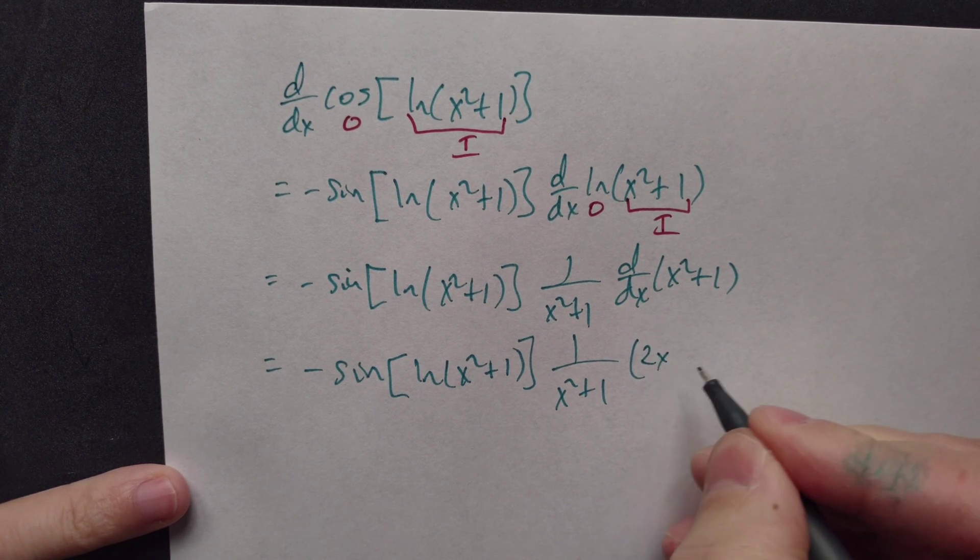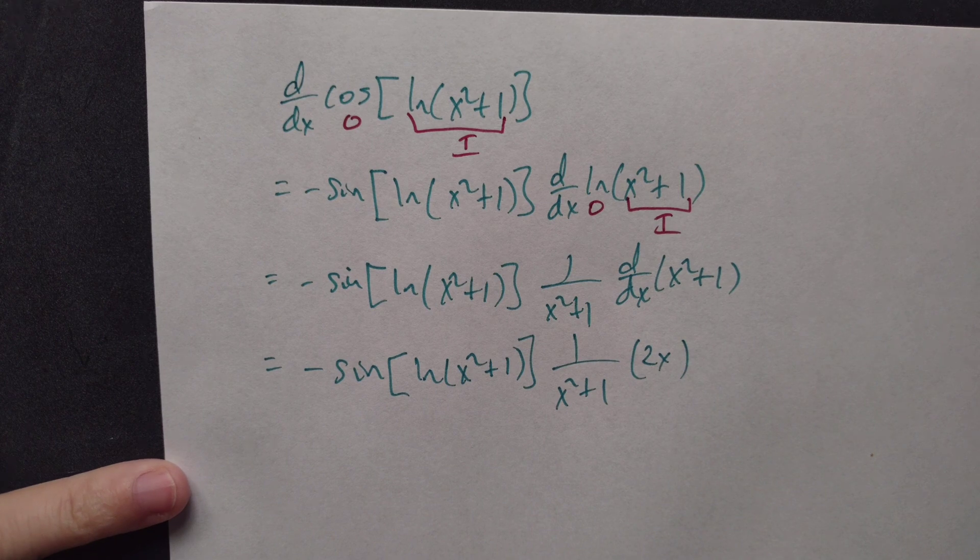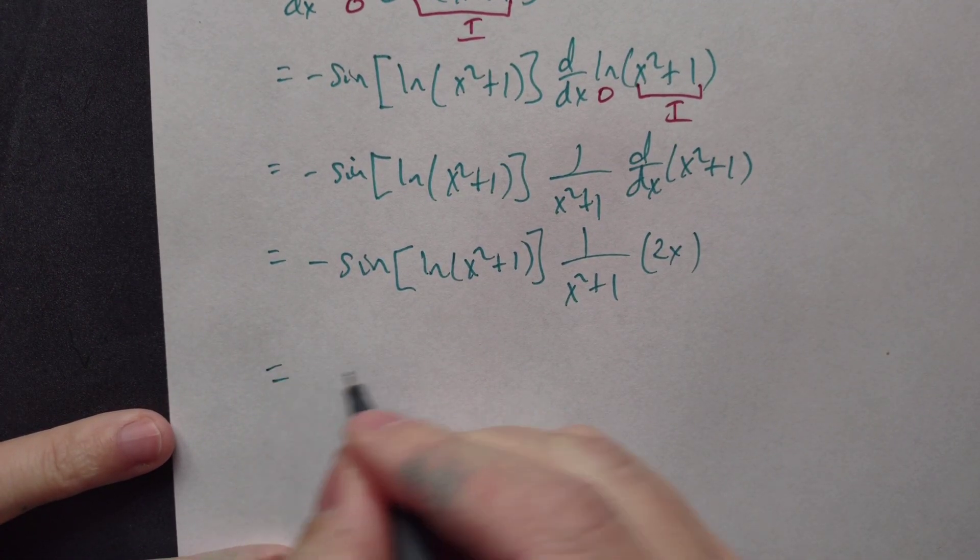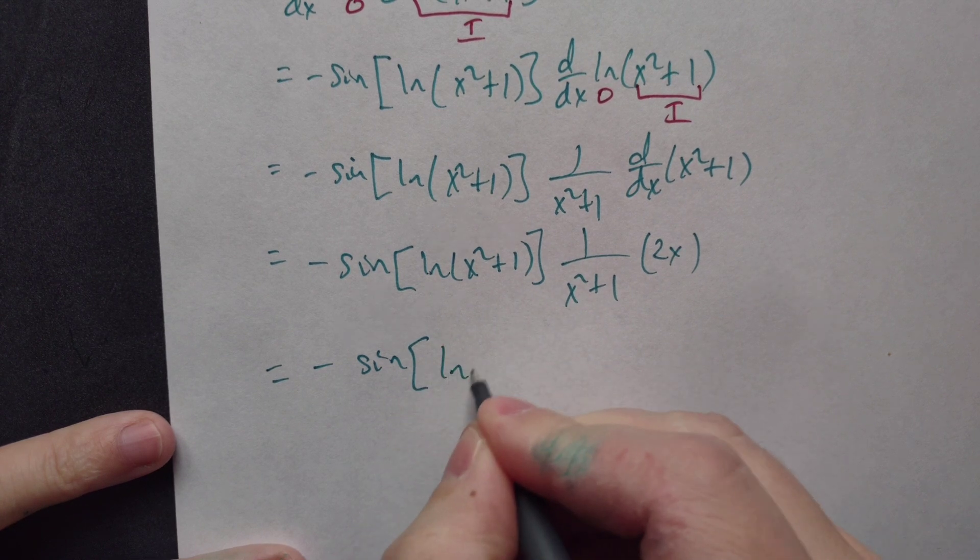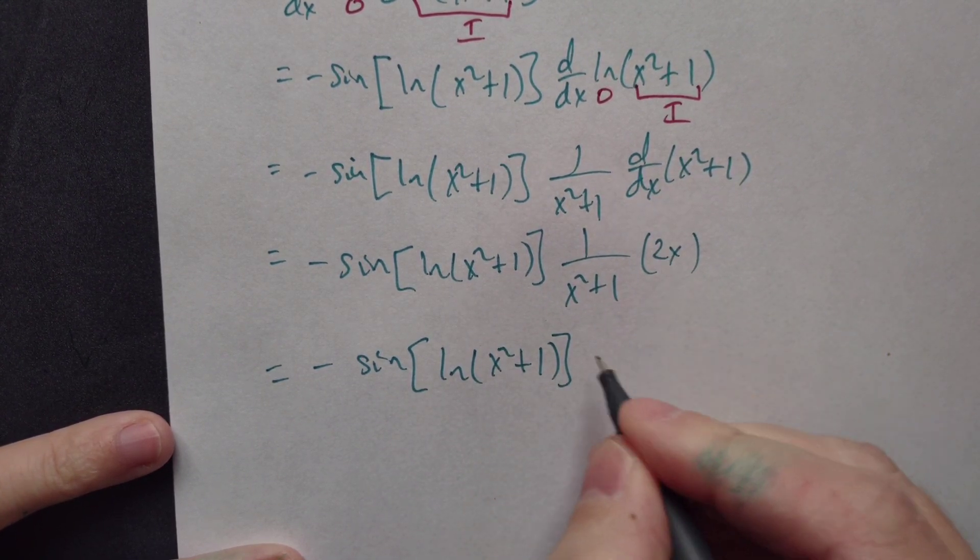Which means lastly, altogether at the bottom, we have negative sine of ln of x squared plus one. Put the two x next to it, or you can put it out here, makes no difference.